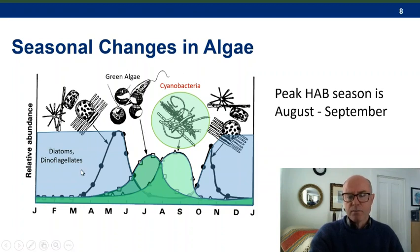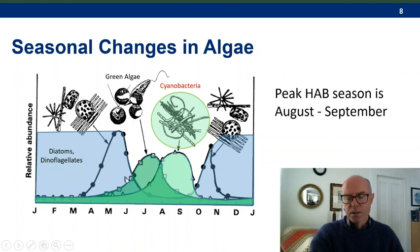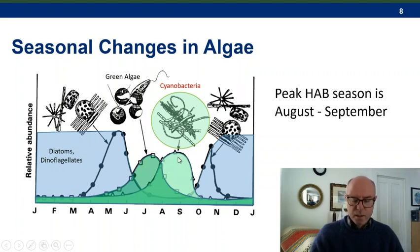Looking at seasonal patterns, diatoms and dinoflagellates — often silica-fixing organisms — are present throughout winter. In early summer we have green algae, and later in the summer towards fall we have the cyanobacteria. Peak HAB season is August to September.